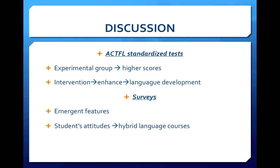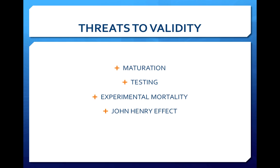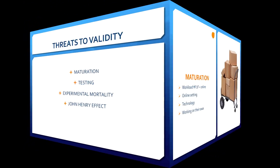Discussion: It is expected that the experimental group will obtain higher scores in the tests than the control group. If the scores of the experimental group are indeed higher, then the online enhanced course did help students in their linguistic development. Additionally, the data collected through the surveys will probably show emerging features that characterize students' attitudes towards blended language instruction. Threats of validity include the following: maturation, testing, experimental mortality and the John Henry effect.